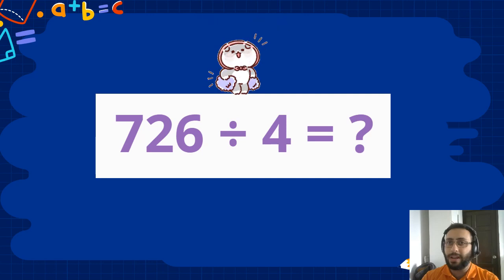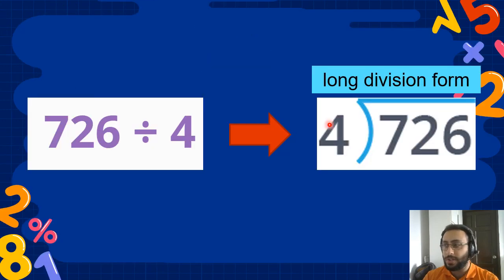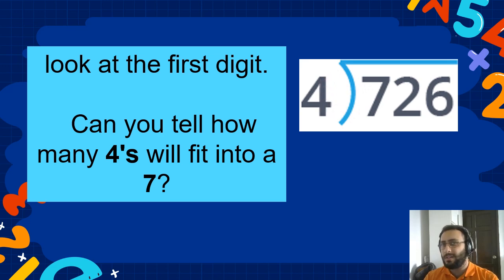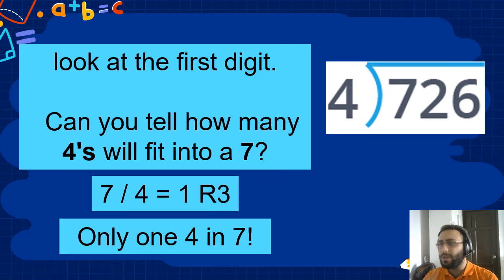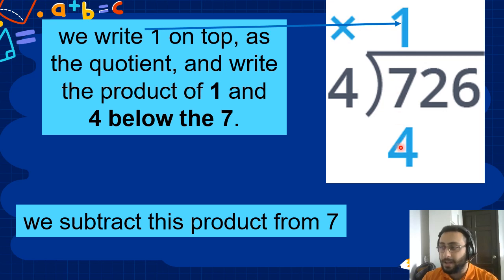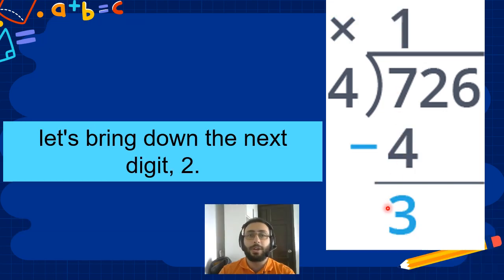To do this one, let's do long division again. So we ask ourselves, how many 4's fit into 7? Only 1 — we can fit only one 4 into 7. So 1 times 4 equals 4. Now we have to subtract. 7 minus 4 equals 3.